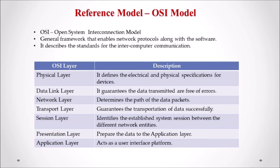The network layer is the third layer, which determines the path of data packets — how the data is transferred from source to destination. Routing of data packets is done using the IP address. The transport layer is the fourth layer, which guarantees the sending and receiving of data, confirms whether transmission is successful, and includes error checking operations to detect any interruptions.